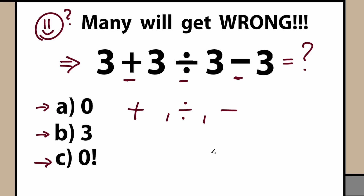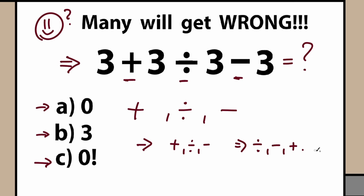We have three mathematical operations: addition, division, subtraction. And what is the correct order? What do we need to do first? Maybe we need to perform addition, division, subtraction — or maybe division, subtraction, addition. So a lot of combinations right here. But in terms of math, it's really great to know what is the correct order of operations.